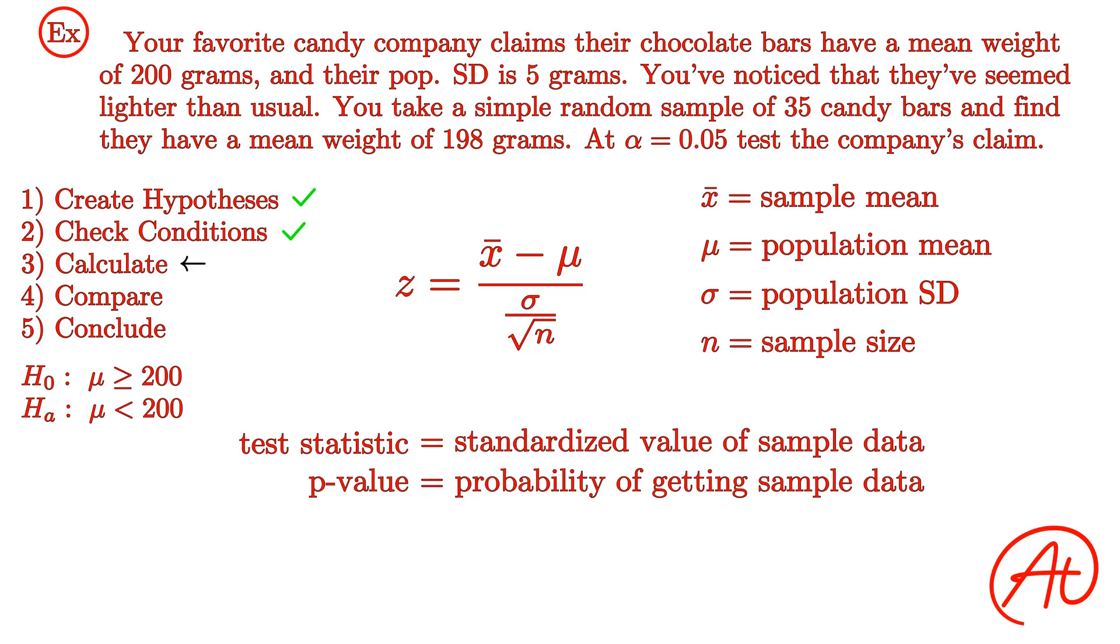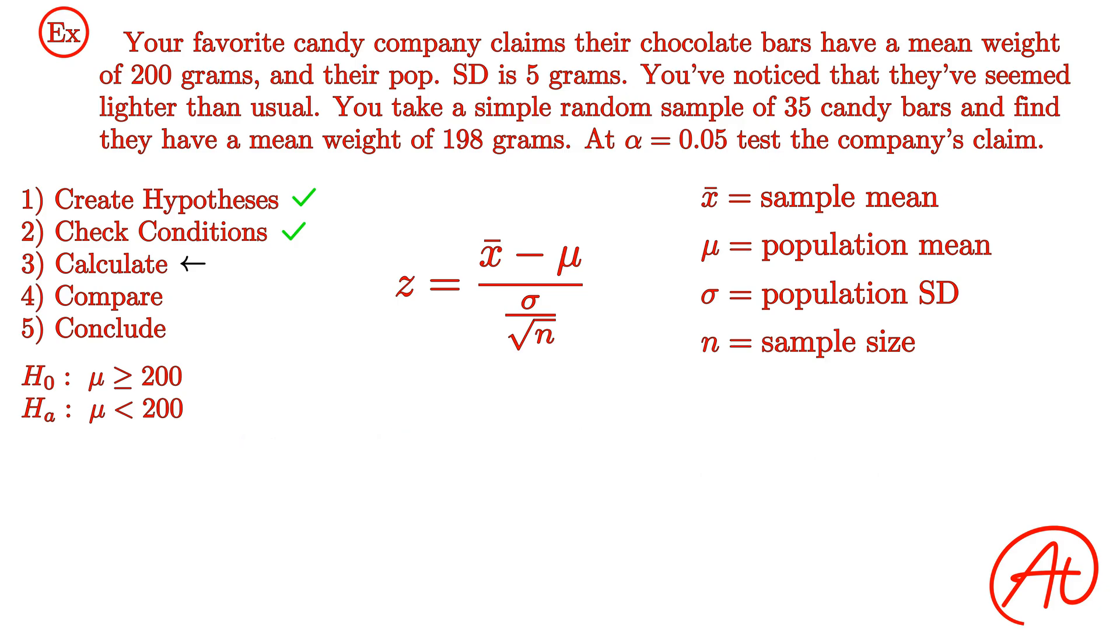Once we have our z-statistic, we can then find our p-value by using a calculator or the tables from class. Alright, now let's calculate these values for our problem. For our problem, we know that the mean from our sample is 198 grams. Our assumed population mean is 200 grams, the population standard deviation is 5 grams, and our sample size is 35. Plugging these into our formula, this means that our test statistic z is 198 minus 200 divided by 5 divided by the square root of 35. Plugging this into our calculator, we get that z equals about negative 2.37.